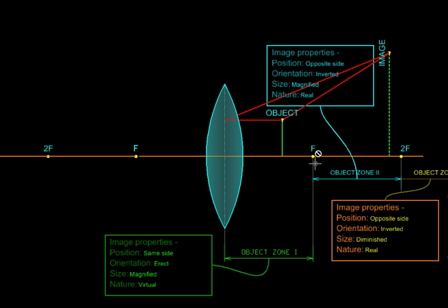In the second zone, between f and 2f, the image is on the opposite side. It is real and inverted, but it is still magnified. And beyond 2f, it is a real and inverted image on the opposite side, but it is a diminished image.